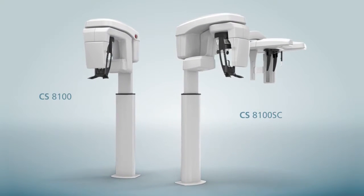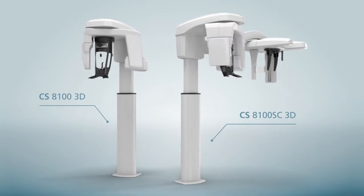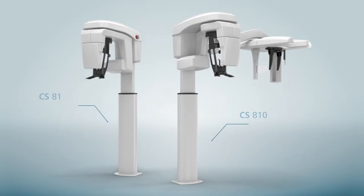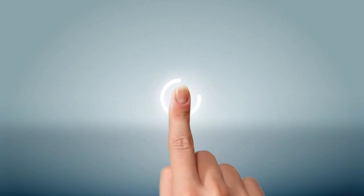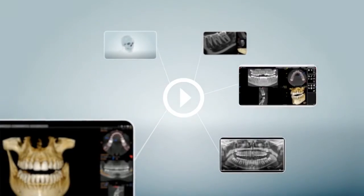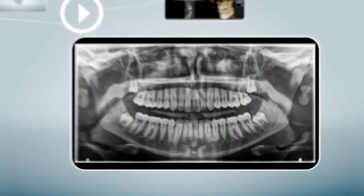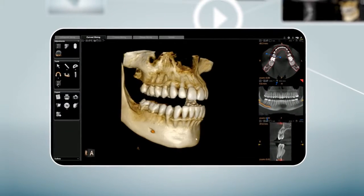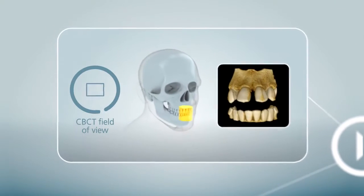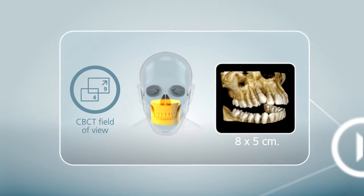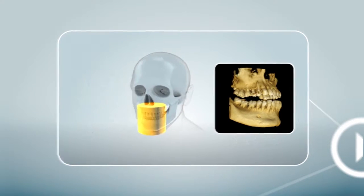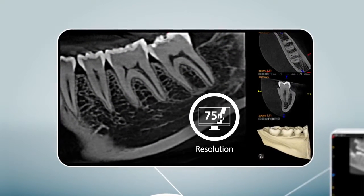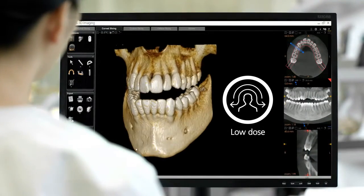The CS8100 3D Family provides you with the tools to cover all your imaging needs for diagnostic excellence and workflow efficiency. These multifunctional imaging systems feature award-winning 2D panoramic technology, powerful CBCT images, a selectable field of view, accuracy up to 75 microns, and the safety of a low-dose mode.